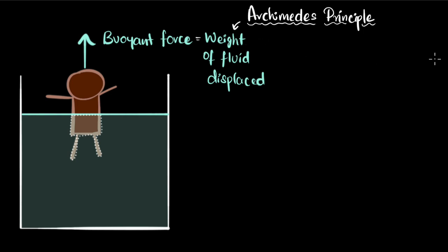And to make sense of this, what would happen if you were to submerge even more? Well, if you were to submerge even more, you will displace even more fluid. The weight of the displaced fluid would increase, the buoyant force will increase, and you will feel even lighter. And that's exactly what you feel. The more you submerge yourself inside a swimming pool, the lighter you feel.